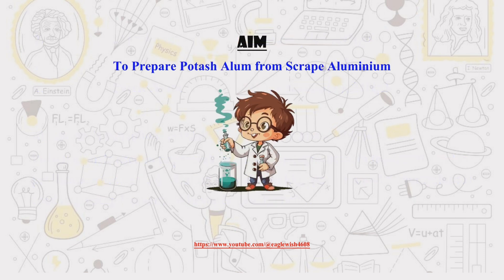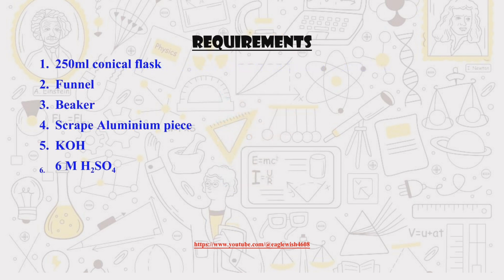The aim of our project is to prepare potash alum from aluminum scraps. For the clean execution of our project, let's first gather all the requirements.